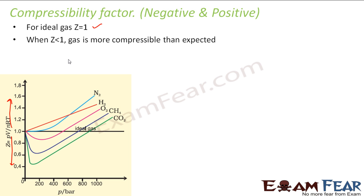When z is less than 1, it is called negative. It is not negative but it is less than 1, so we call it a negative value because here 1 is considered as a reference. For it is less than 1, that means it is more compressible than expected. The gas is more compressible than expected, and gases like oxygen, methane and carbon dioxide behave in this fashion for certain pressure values. For example, oxygen below 400 pressure per bar, this behaves like a real gas where z is less than 1.